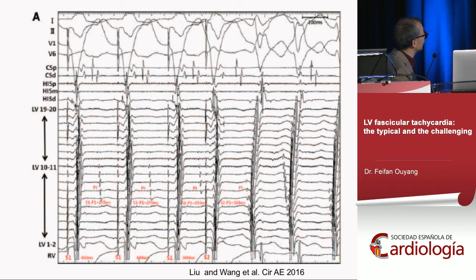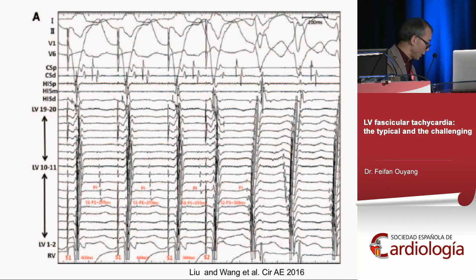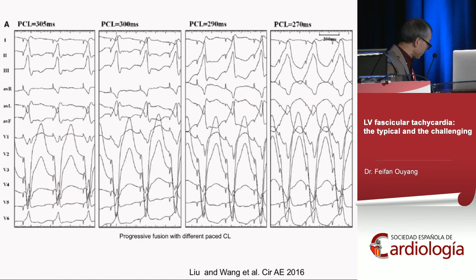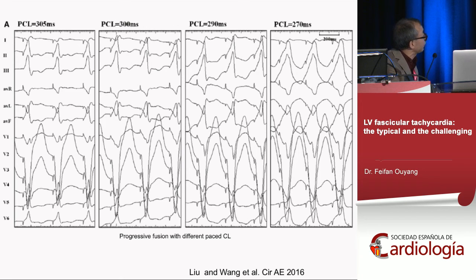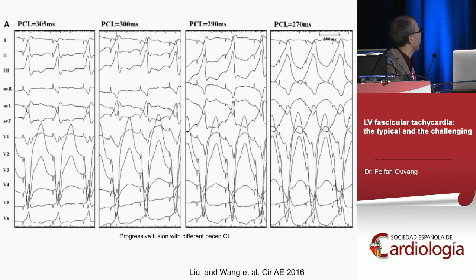Finding the potential, you can identify dual ventricular pacing with S1, S2 and decremental induction of morphology. You can also entrain the tachycardia. In some patients where you cannot find the potential, you can perform entrainment — pacing at different cycle lengths from the right ventricle (305, 300, 290, 270 ms), observing progressive fusion with pacing, which indicates the tachycardia is a macroreentrant tachycardia. Another common finding is slow conduction in the posterior fascicle during sinus rhythm.